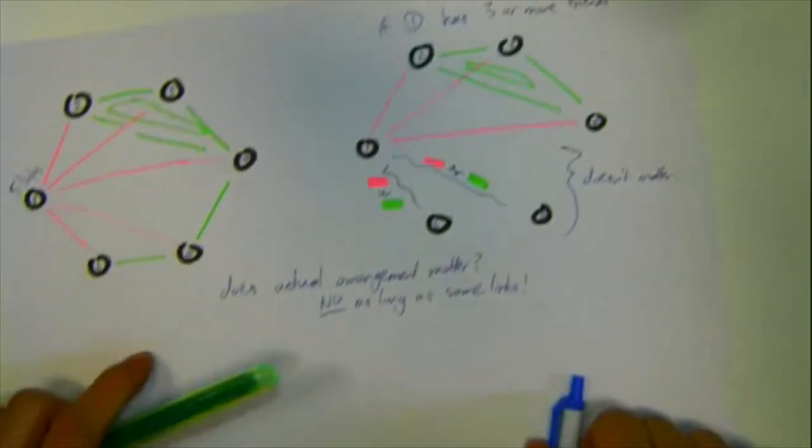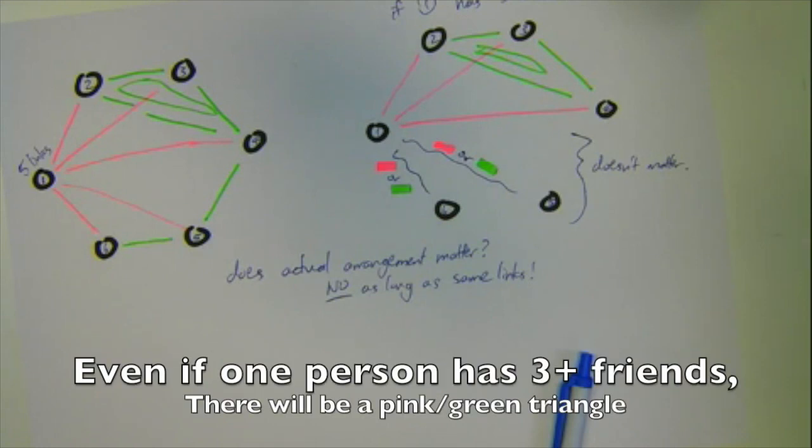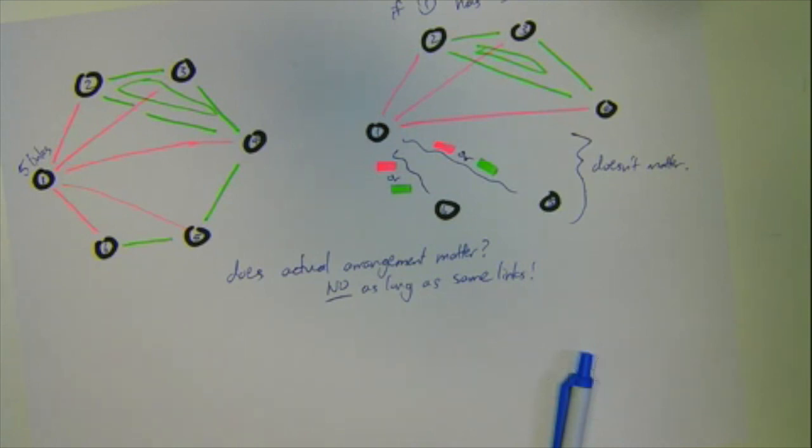Remember to keep recapping, what have we just done? We've shown that even if one person has 3 or more friends, there will be a triangle of either friends or enemies. You won't believe at this point how close we are to the full solution.